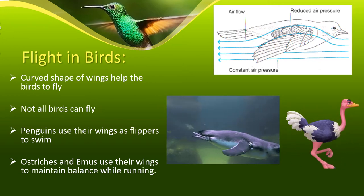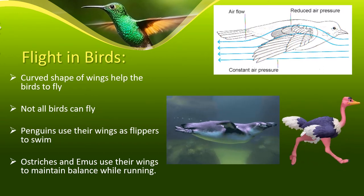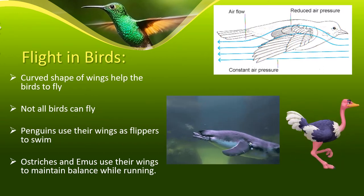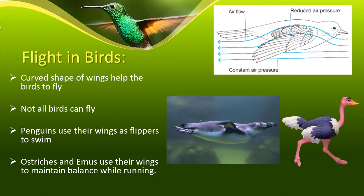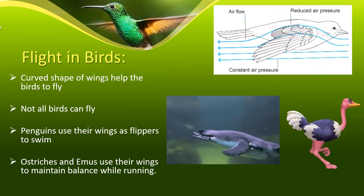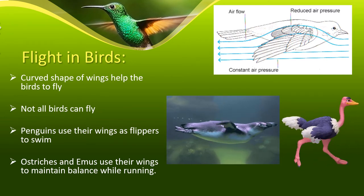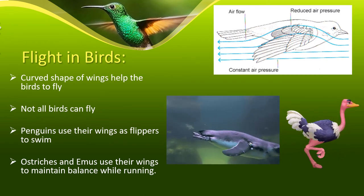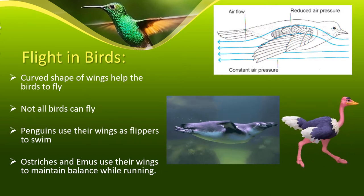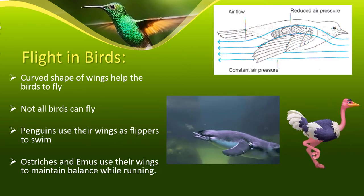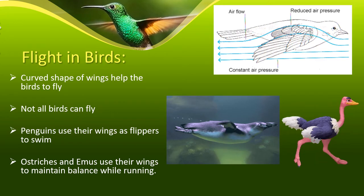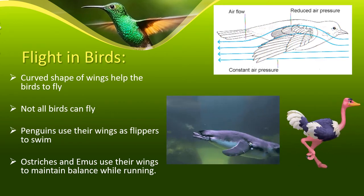Some birds' wings are not meant for flying. In the case of penguins, the wings are called flippers, which help them to swim. Emus and ostriches use their wings to maintain their balance while running fast.